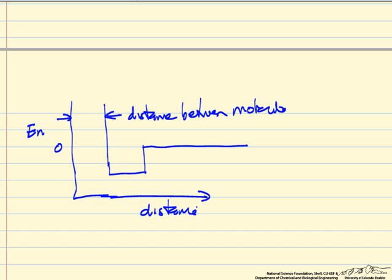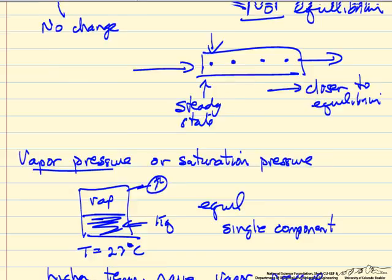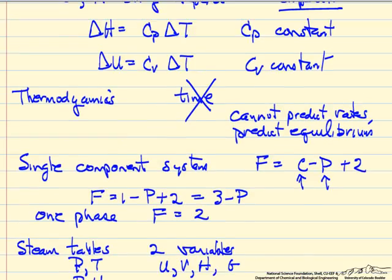So if this energy well is deeper, then we expect the molecules have stronger attraction. For example, we expect they would have lower vapor pressure.